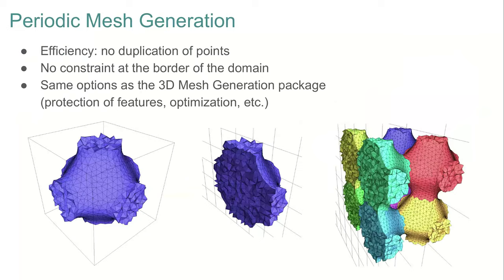To conclude on the Delaunay mesh refinement procedure, CGAL also provides a way to mesh periodic domains. Here we have a domain that repeats along the three Cartesian axes. All functionalities described before are available, and the generated mesh can be traversed infinitely without duplicating the mesh structure. The removal of boundary conditions is particularly interesting, for example for simulations in material science.